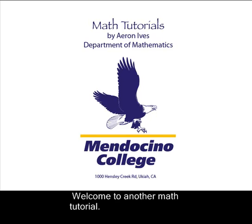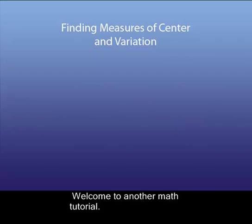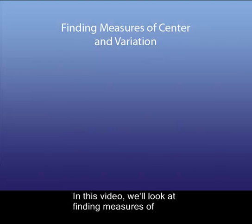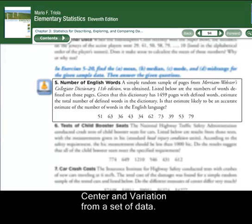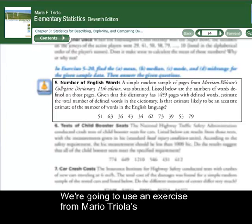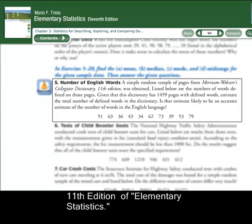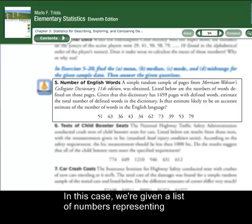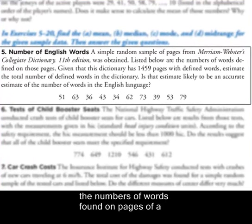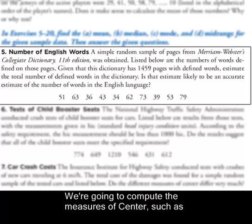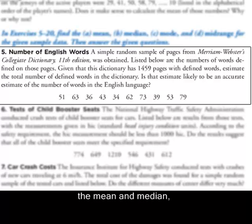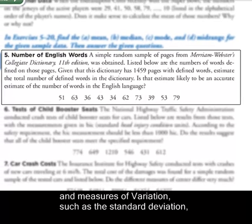Welcome to another math tutorial. In this video we're going to look at finding measures of center and variation from a set of data. We're going to use an exercise from Mario Triola's 11th edition of Elementary Statistics. In this case we're given a list of numbers representing the numbers of words found on pages in a dictionary, and we're going to compute the measures of center, such as the mean and the median, and measures of variation, such as standard deviation, using our calculator.